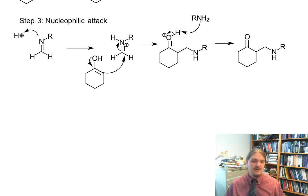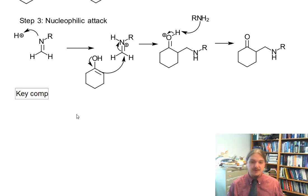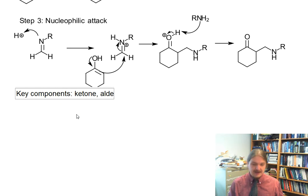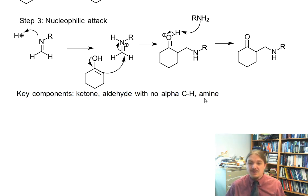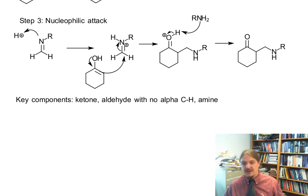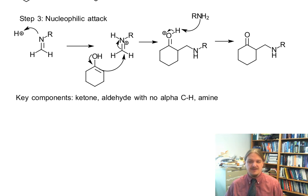In order for this reaction to work, you need key components: you need a ketone, an aldehyde with no alpha-carbon hydrogens, and then you need an amine. You need this aldehyde with no alpha-hydrogens because you need that aldehyde to be electrophilic primarily and not be able to form an enol itself and compete with the other things going on.